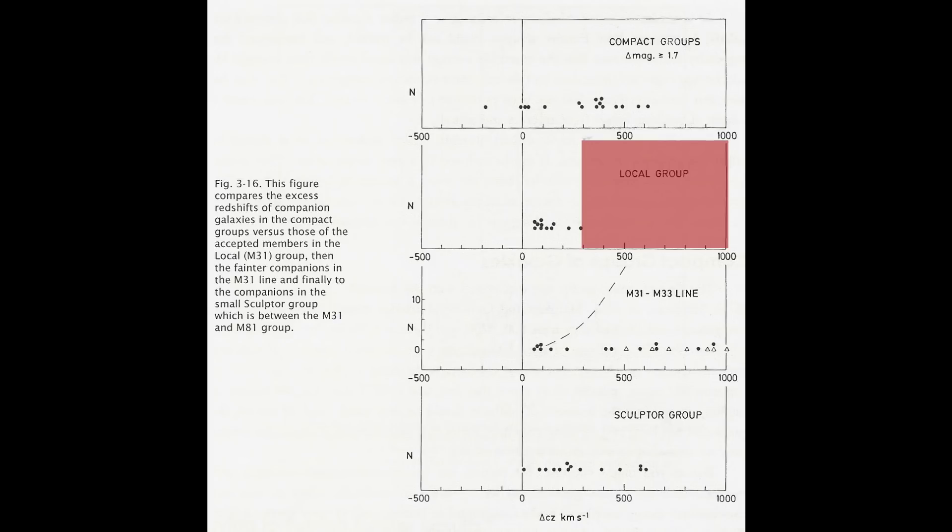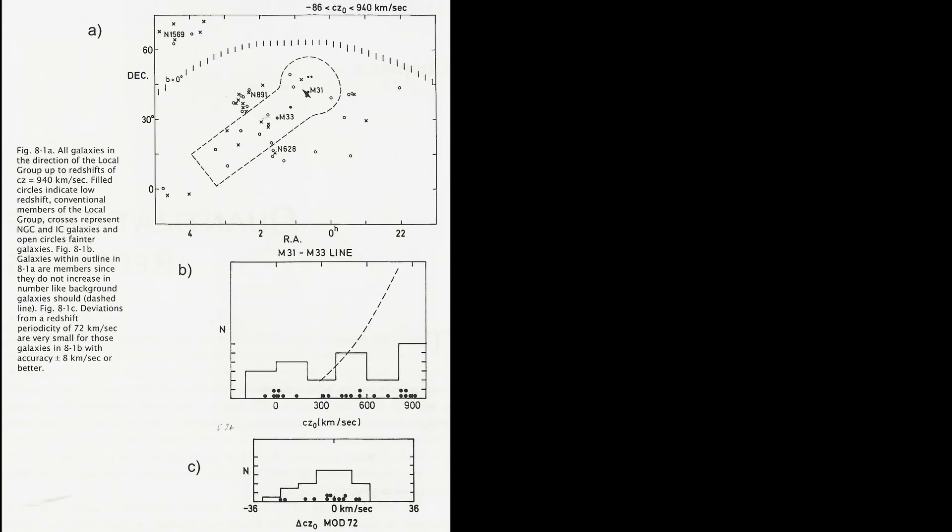If you examine the brightest galaxies as they fall on the sky it is immediately obvious that there is a loose string of them running out of M31 through M33 and ending close to 3C120 near the disk of our galaxy. These galaxies have redshifts up to 900 km per second and are obviously members of the local group.